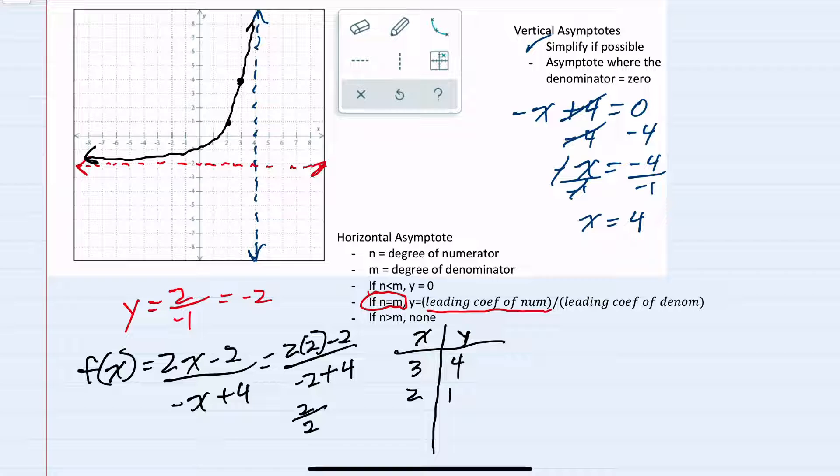Moving to the right hand side of that vertical asymptote, I can plug in 5 for our x value. It gives us 10 minus 2 in the numerator, so that would be 8. In the denominator, negative 5 plus 4 is negative 1. So negative 8 is our y value when x equals 5. Plotting that, we have this point.